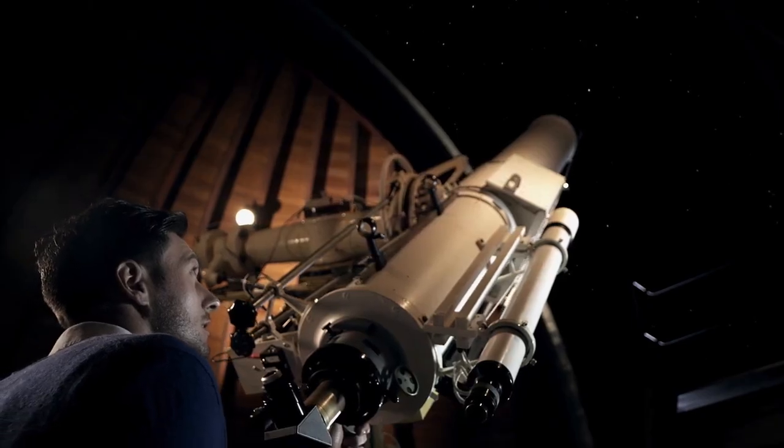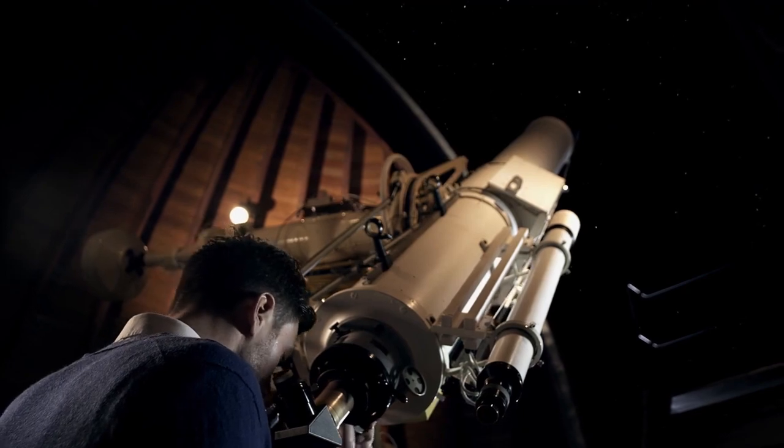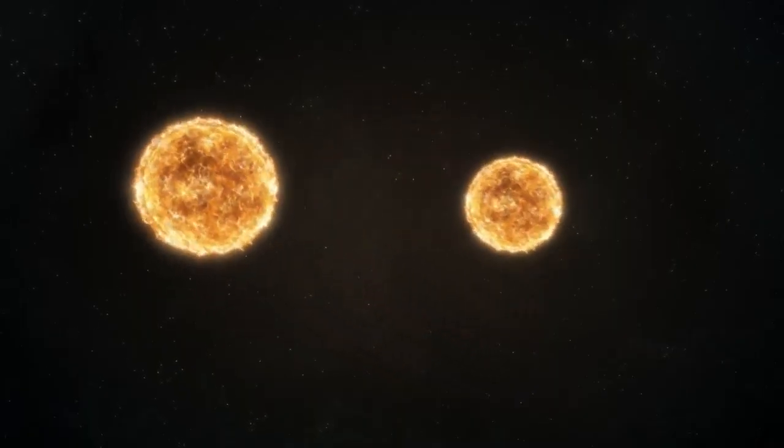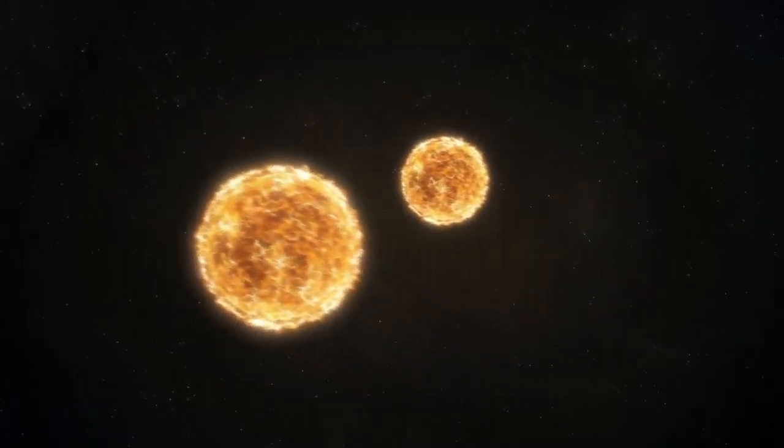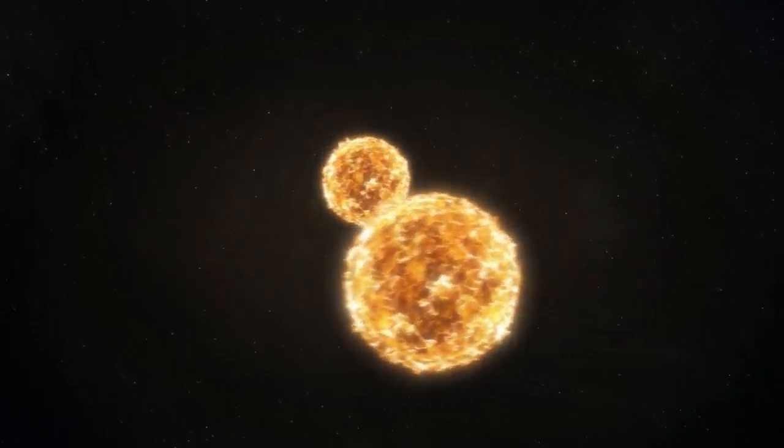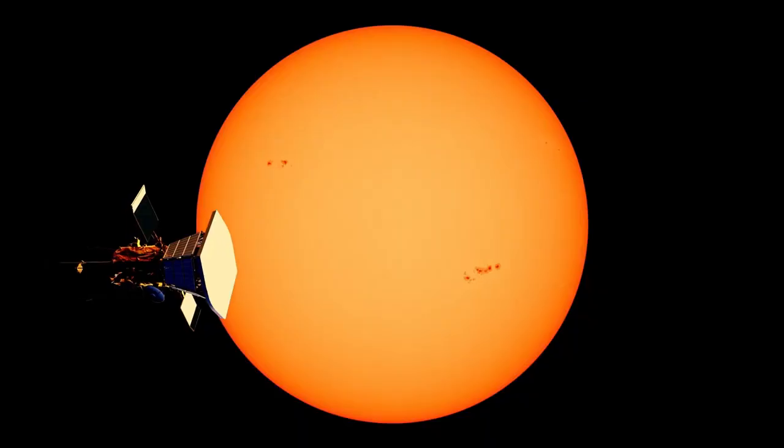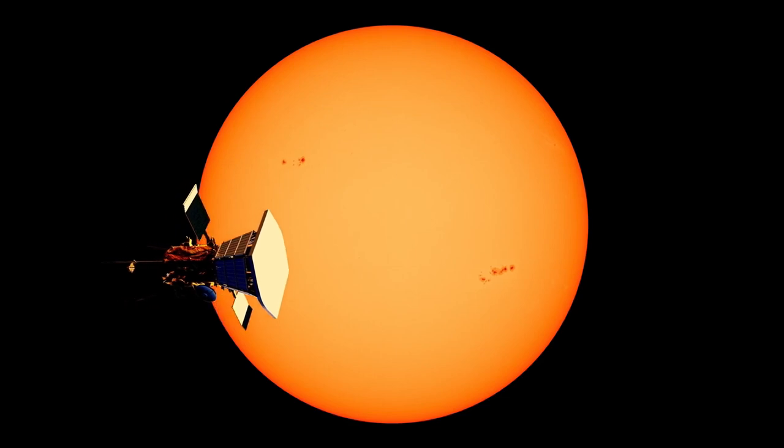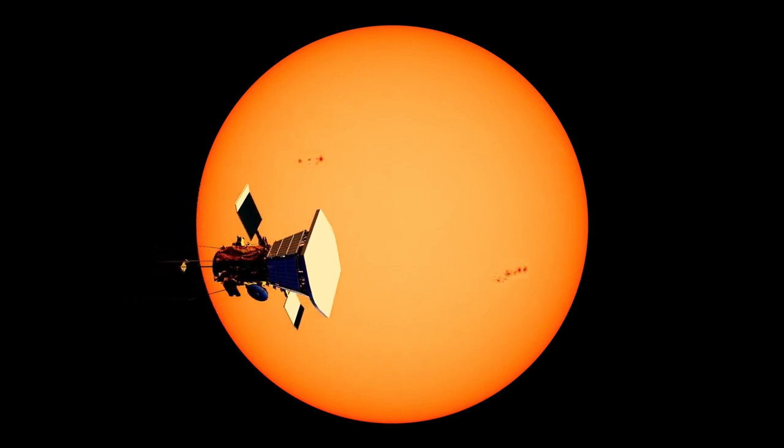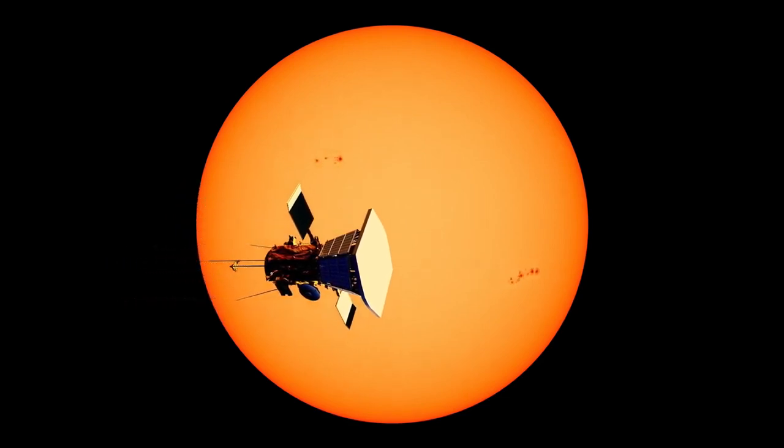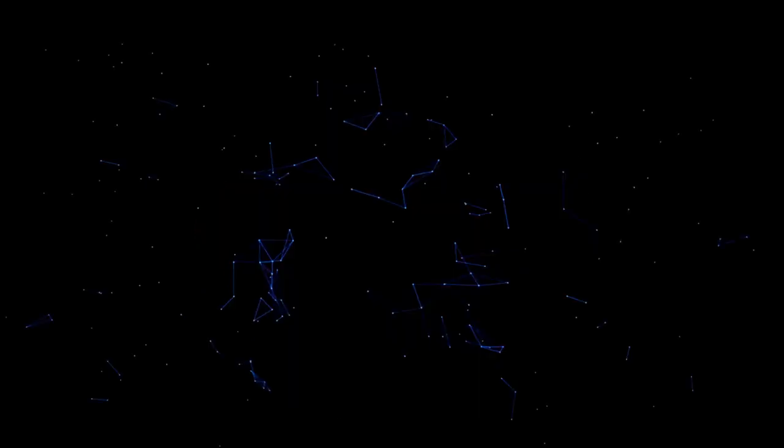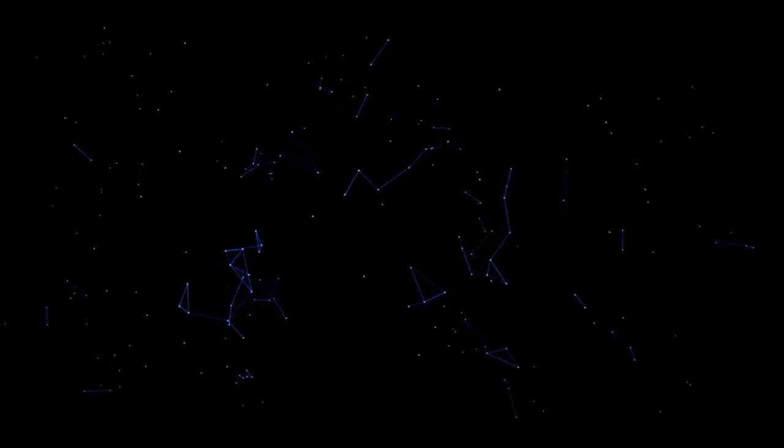Predicting a supernova remains one of the most difficult tasks in astrophysics. The exact moment when a star will explode is nearly impossible to pinpoint. It could happen tomorrow, or it could be 100,000 years from now. Musk's announcement suggests that either he has access to new data or has observed a pattern others have missed. He seems confident that Betelgeuse's recent fluctuations are not random but rather indicative of an impending collapse.